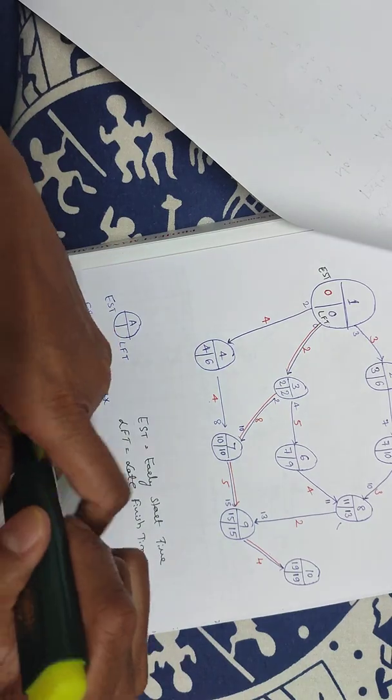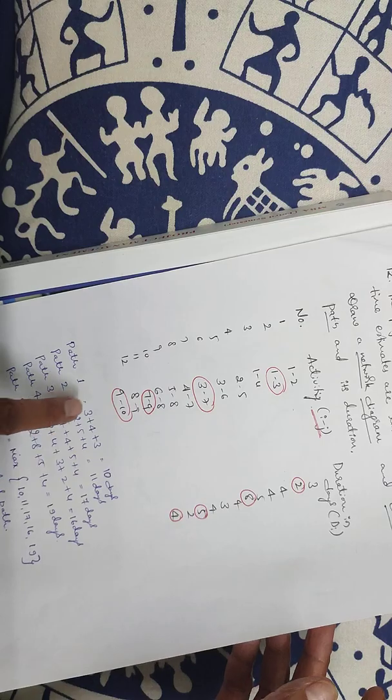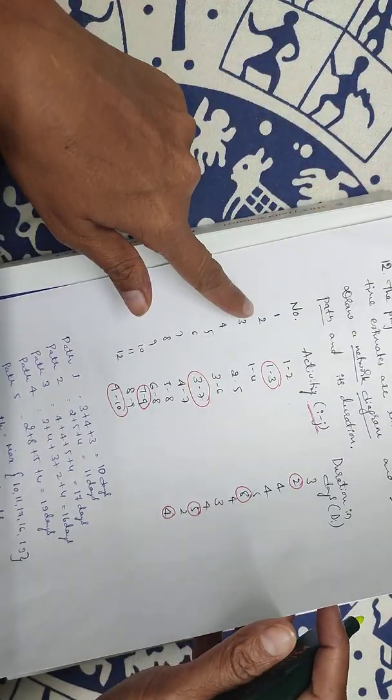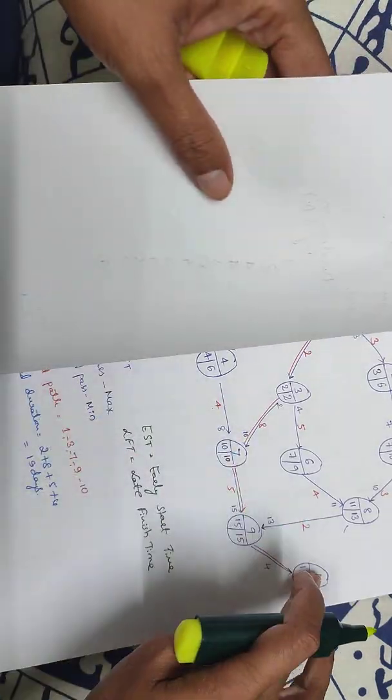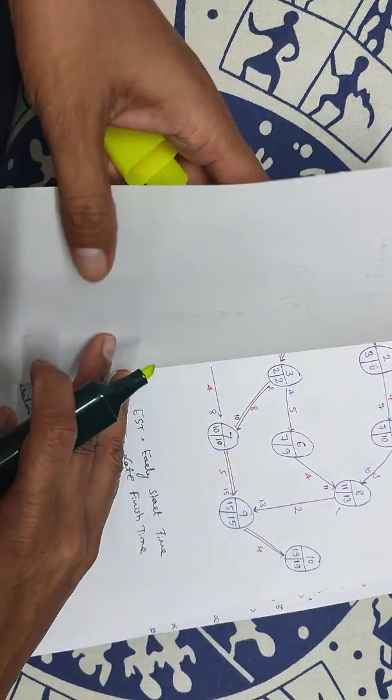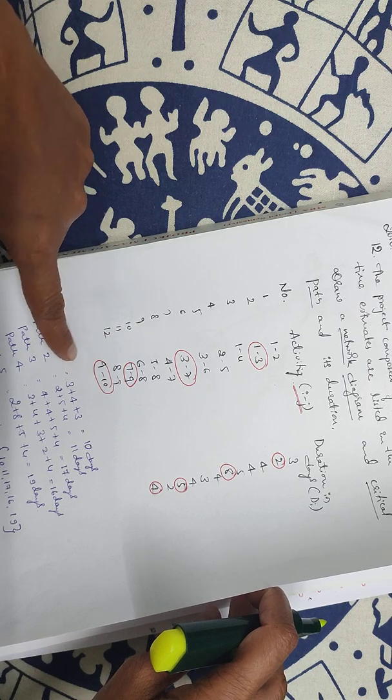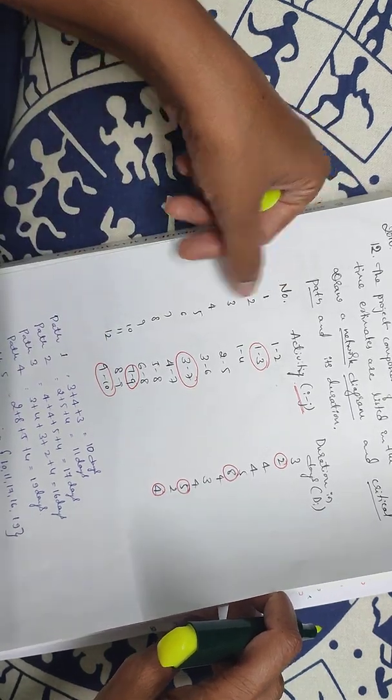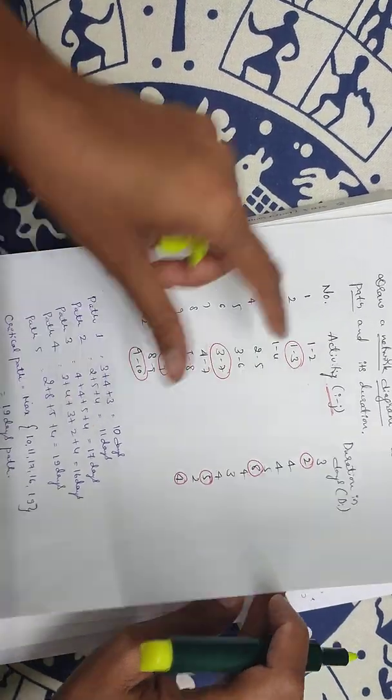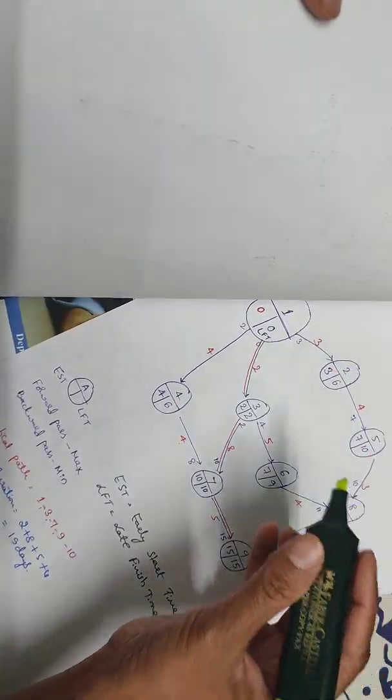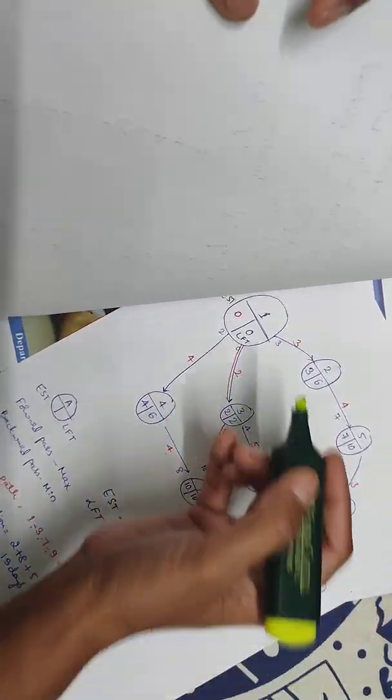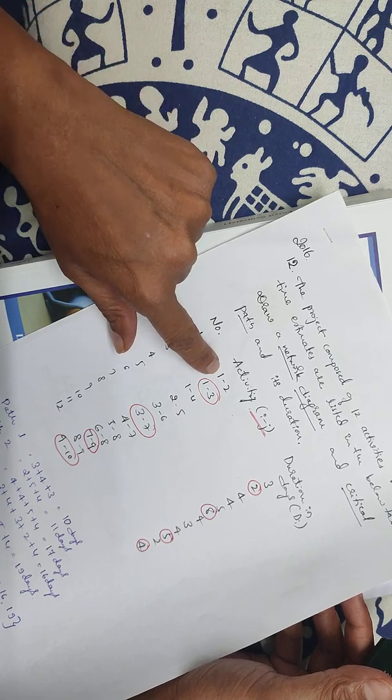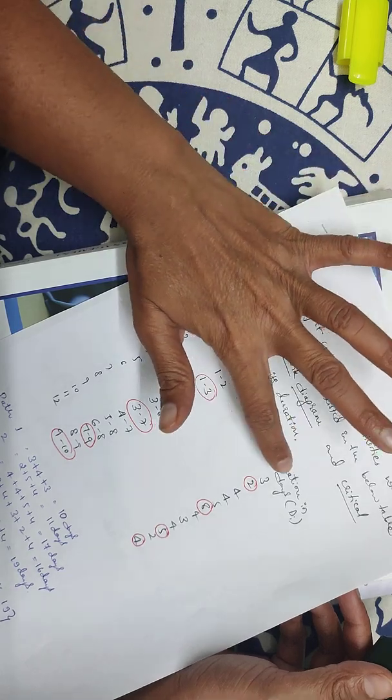Activity 1 to 12, there are 12 activities. First we'll draw the network diagram in order. Let me start with node 1. We have activities 1 through 12. Let me draw nodes 1, 2, 3, 4, 5, 6, 7, 8, 9, 10.